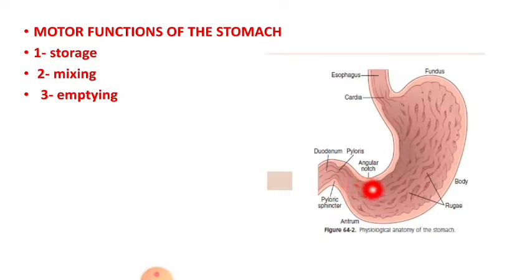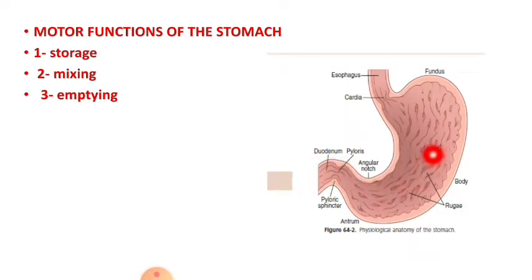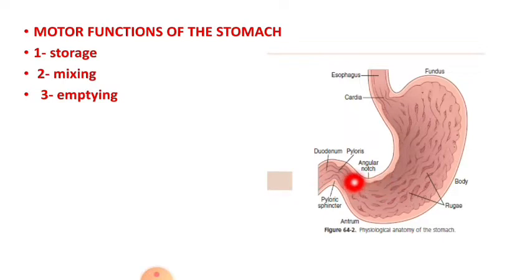When the sphincter closes, the peristaltic wave causes the contents to be propelled toward the pylorus, and a part of the contents is pushed back — this backward movement is called retropulsion. Retropulsion causes mixing of the food, forming what is called chyme. This retropulsion is important and the overall mechanism is called the pyloric pump.